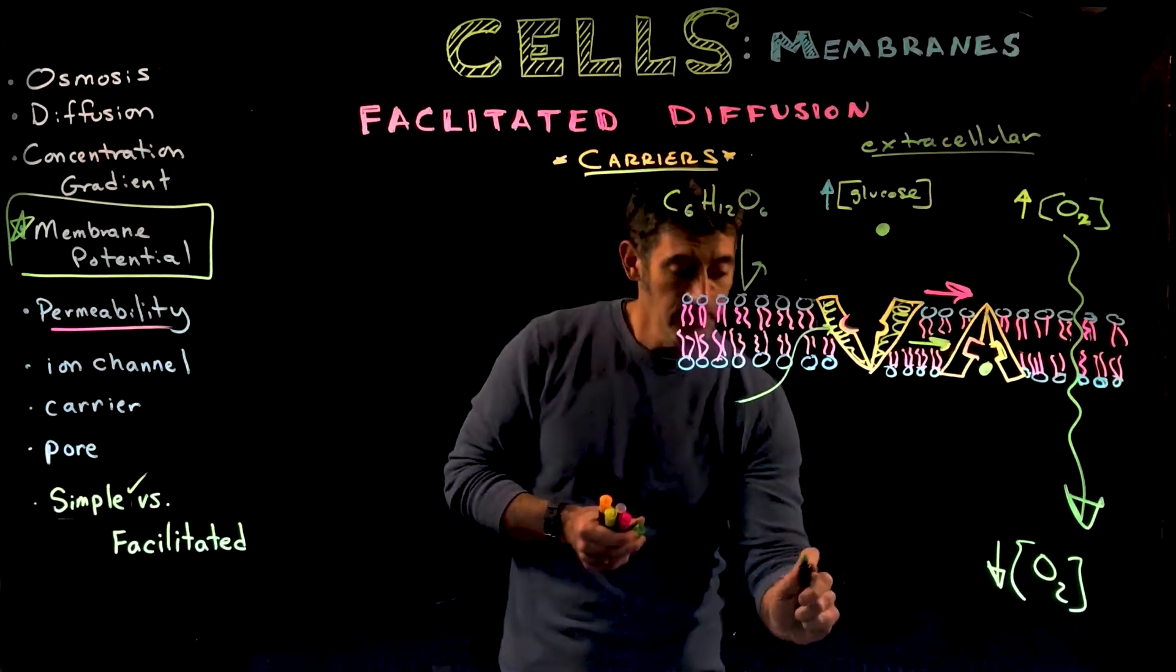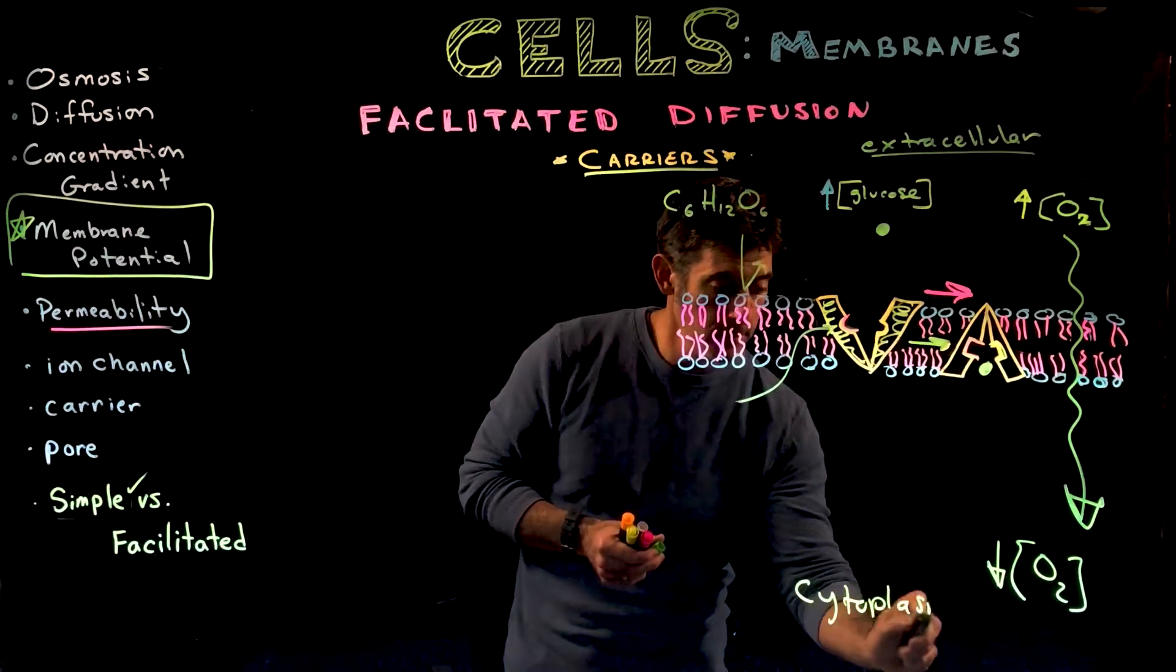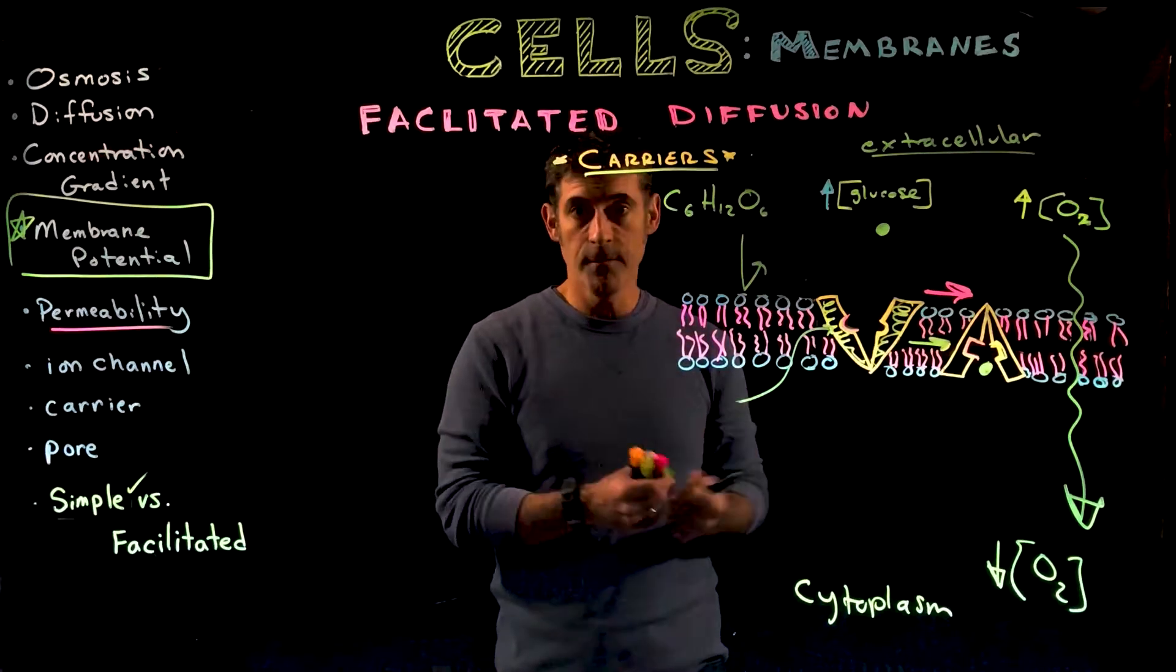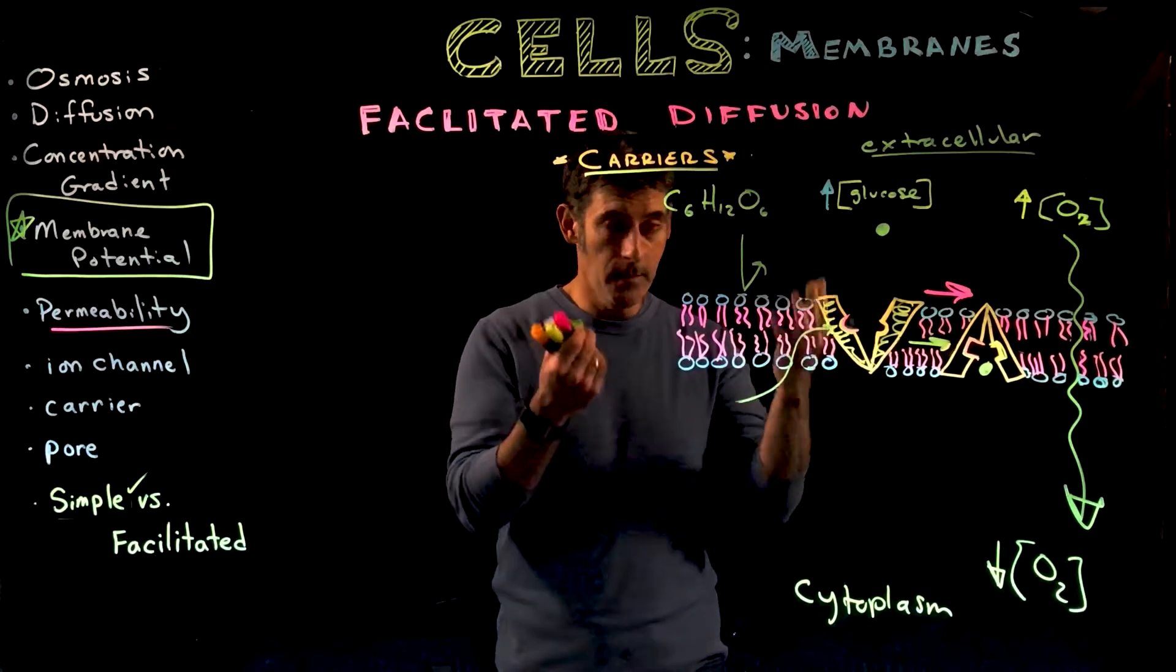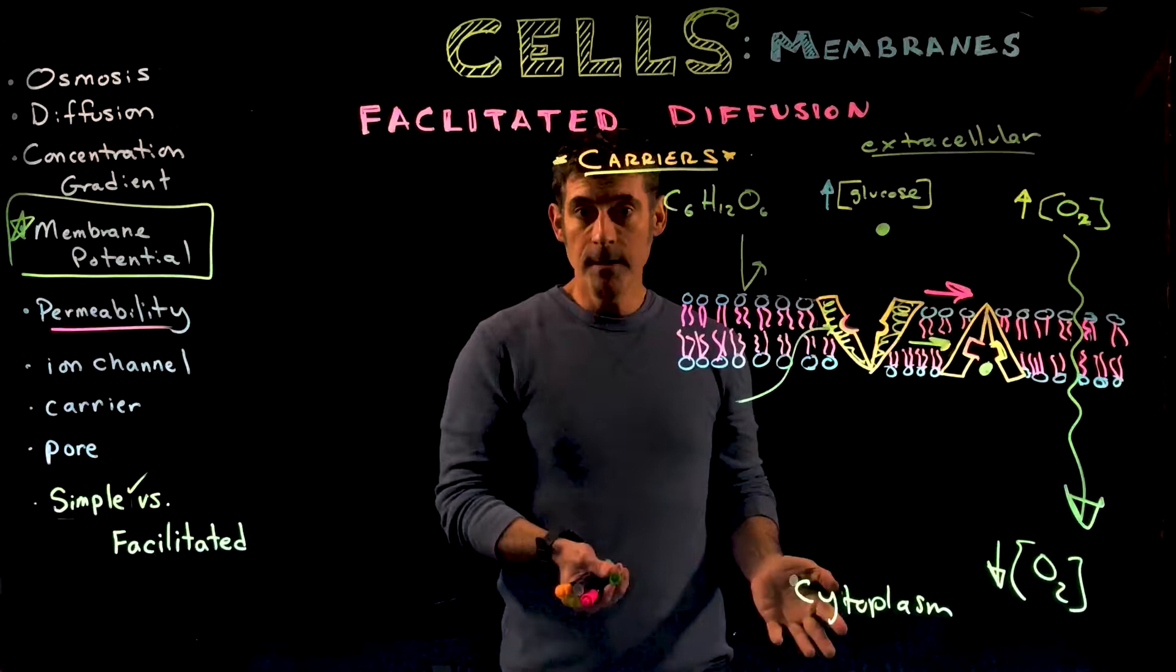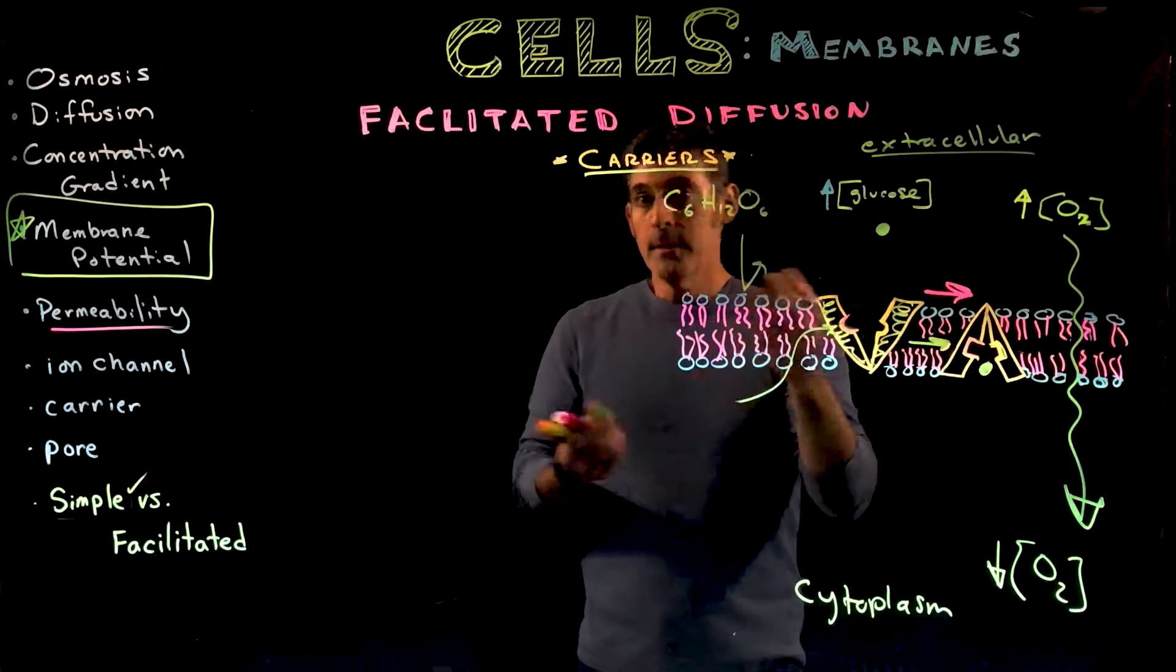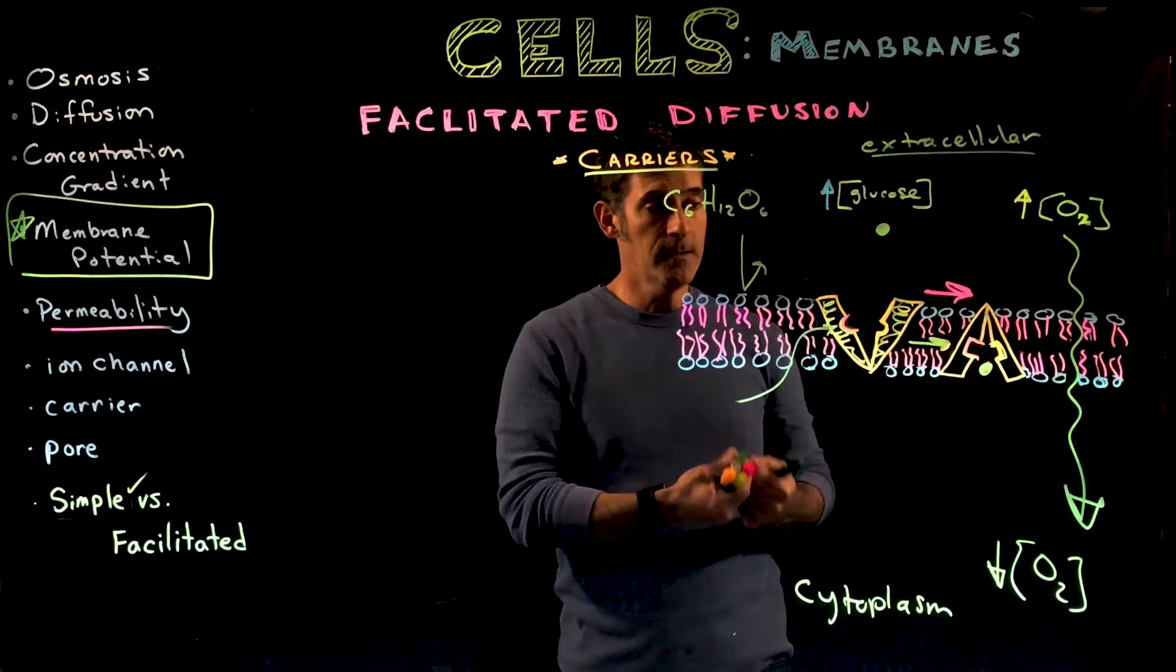But cells want glucose. Glucose provides the cell with energy, and the cell doesn't want to expend energy to get it. It would prefer the glucose just move in through diffusion. But there's a barrier: the membrane itself. So we have carriers that help glucose into the cell.